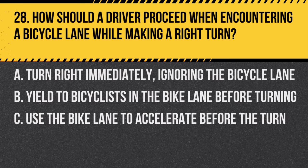Question 28. How should a driver proceed when encountering a bicycle lane while making a right turn? A. Turn right immediately, ignoring the bicycle lane. B. Yield to bicyclists in the bike lane before turning. C. Use the bike lane to accelerate before the turn. Answer: B. Yield to bicyclists in the bike lane before turning. Drivers must yield to any bicyclists in the bike lane before making a right turn.